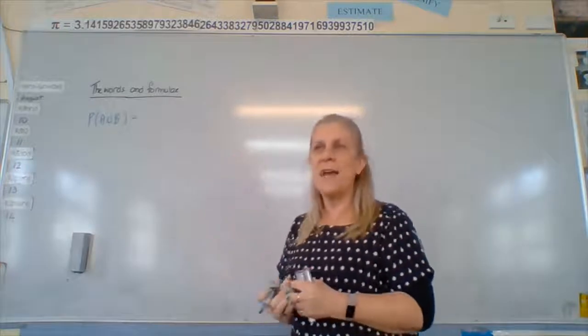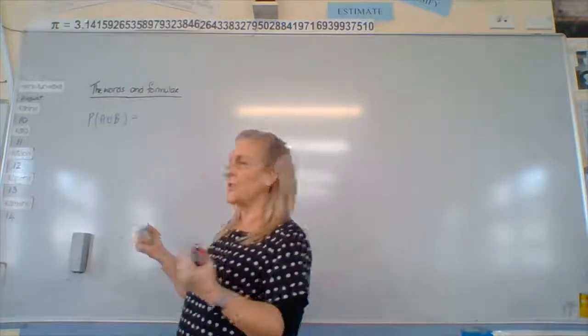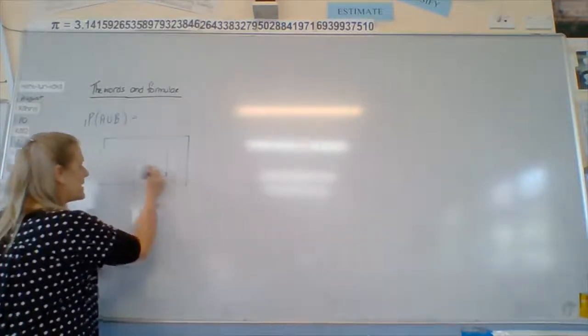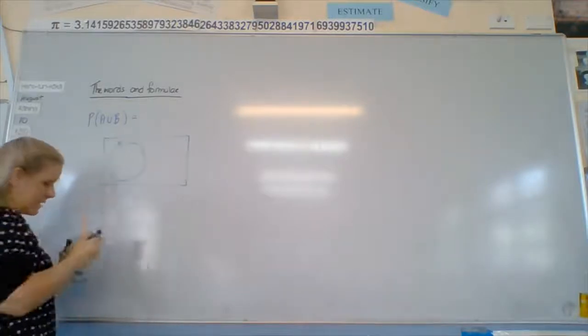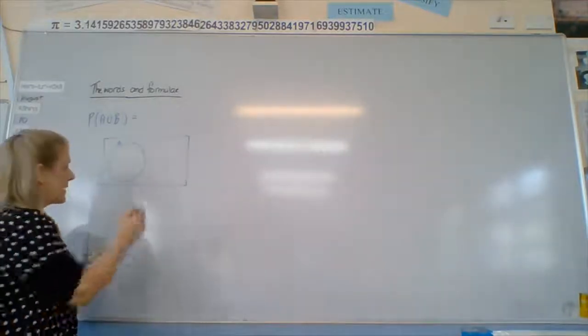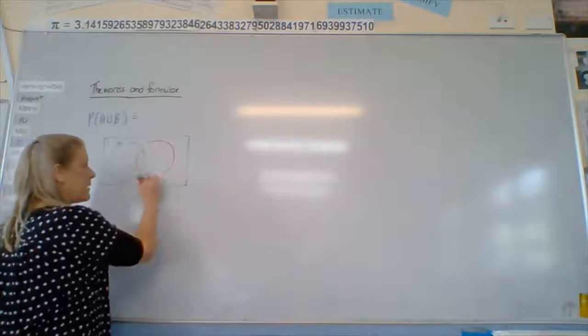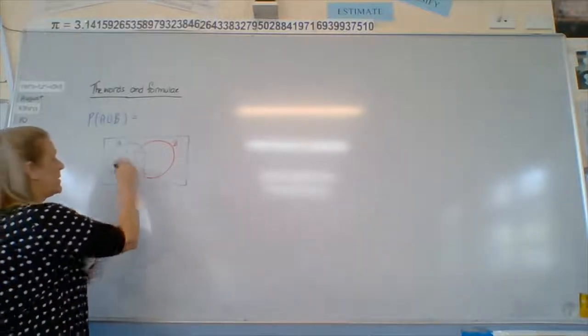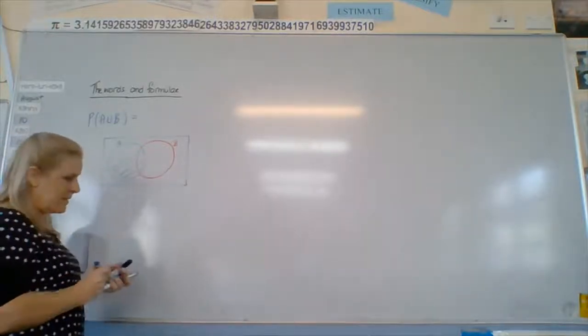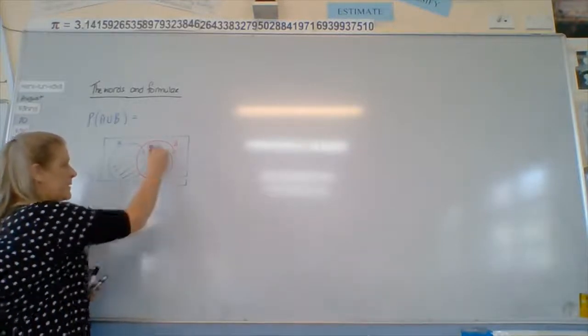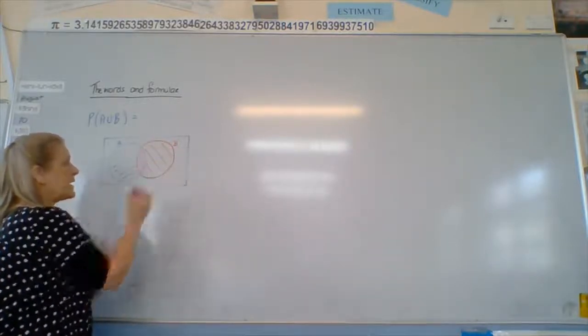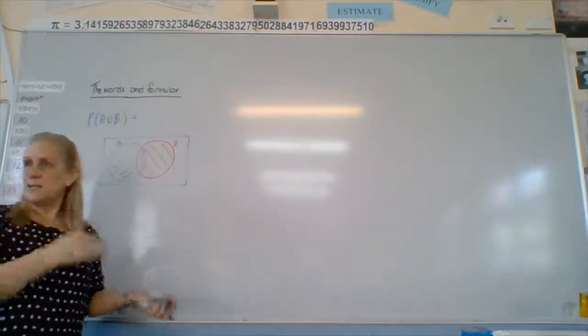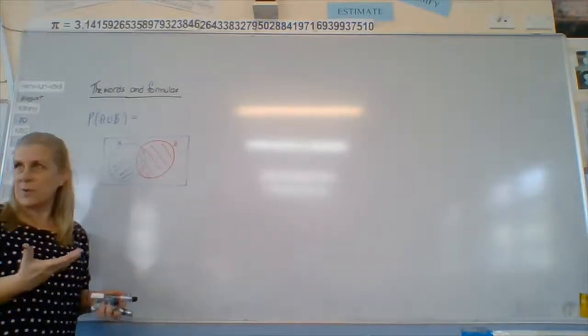Anyway, moving on, we've got probability of A union B. So if we look at the picture of this in our Venn diagram, we've got set A, and we're adding to that set B. So that means we've got this one, and this one. The problem here is that we've counted those people who do English and PE twice, or biology, whatever it was.